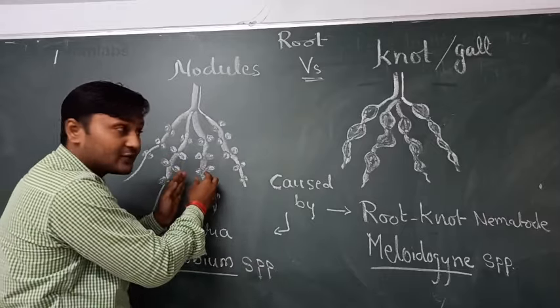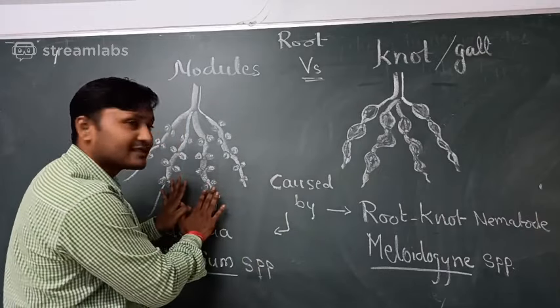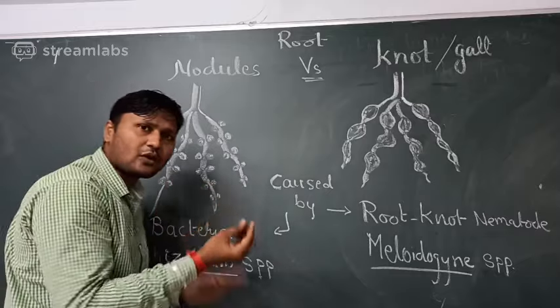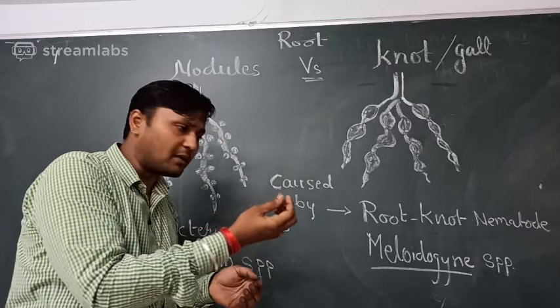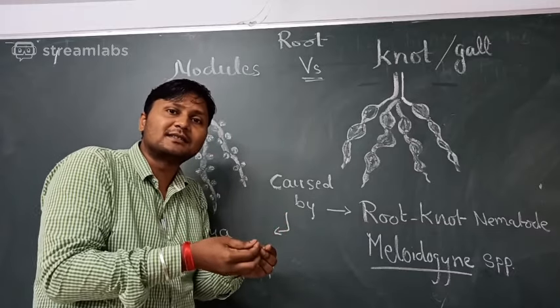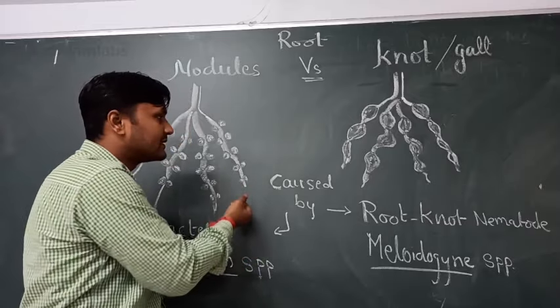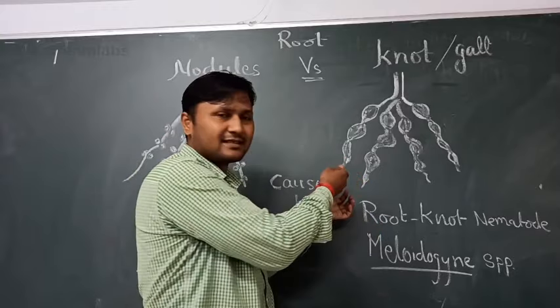Root knot galls are very soft and hard, just like a root, but nodules are not just like a root. Nodules are very soft. When you detach them, they are very soft. If you crush root knot galls, you cannot crush them easily. You cannot easily crush these particular galls.